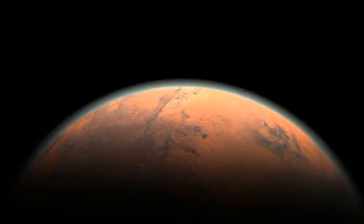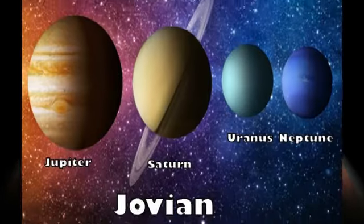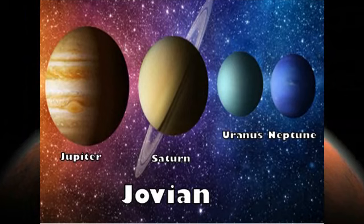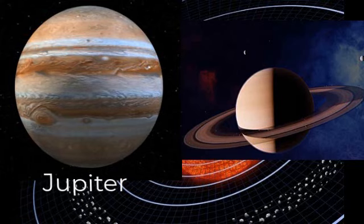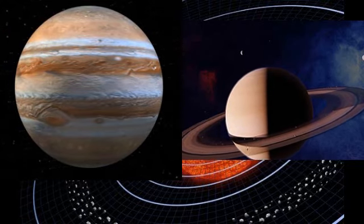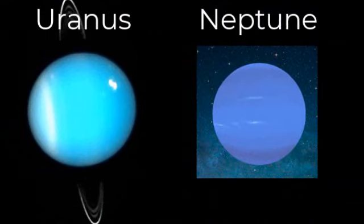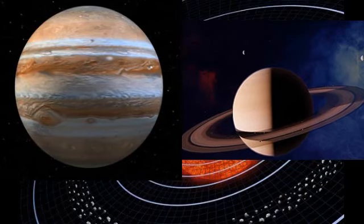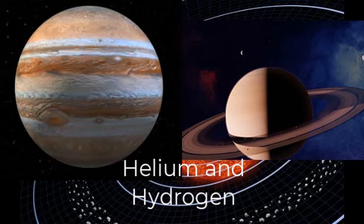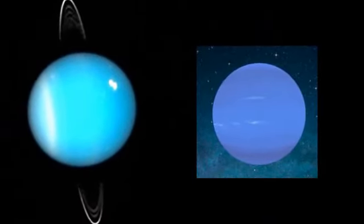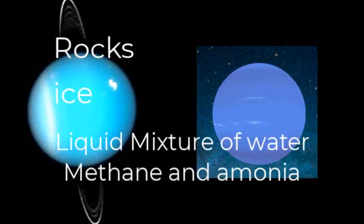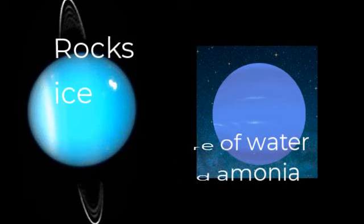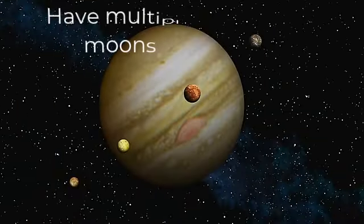Beyond the four terrestrial planets of the inner solar system lie the jovian planets of the outer solar system. The jovian planets include gas giants Jupiter and Saturn, and ice giants Uranus and Neptune. The gas giants are predominantly made of helium and hydrogen, while the ice giants also contain rock, ice, and a liquid mixture of water, methane, and ammonia. All jovian planets have multiple moons, support ring systems, and have no solid surface.